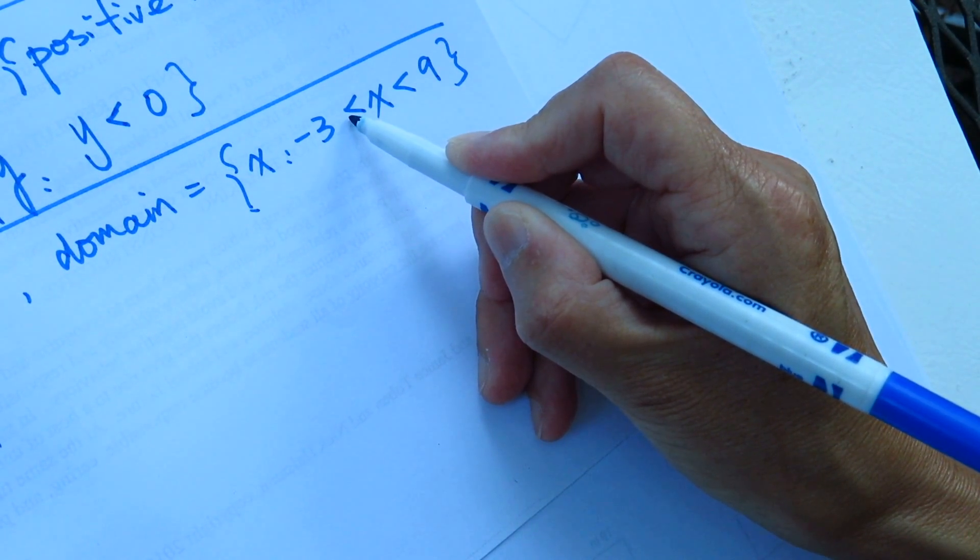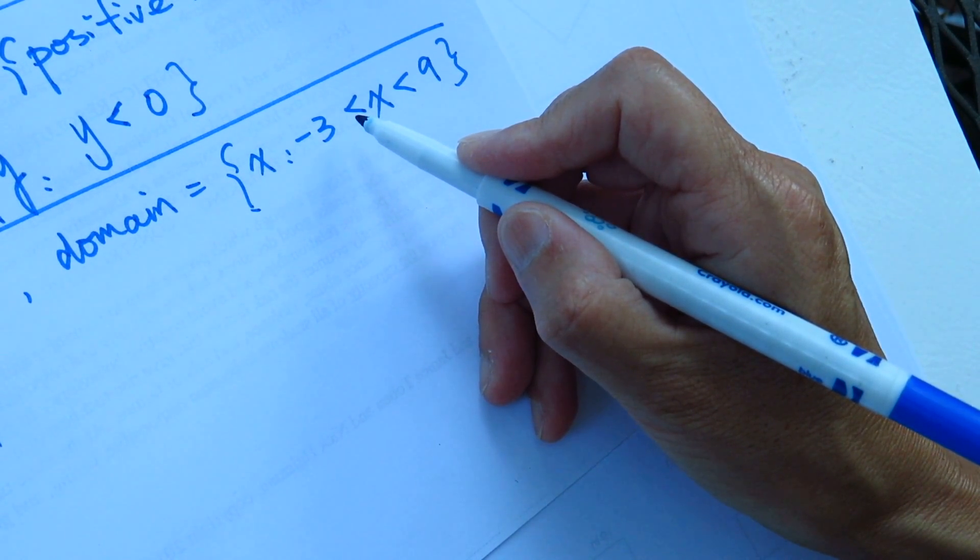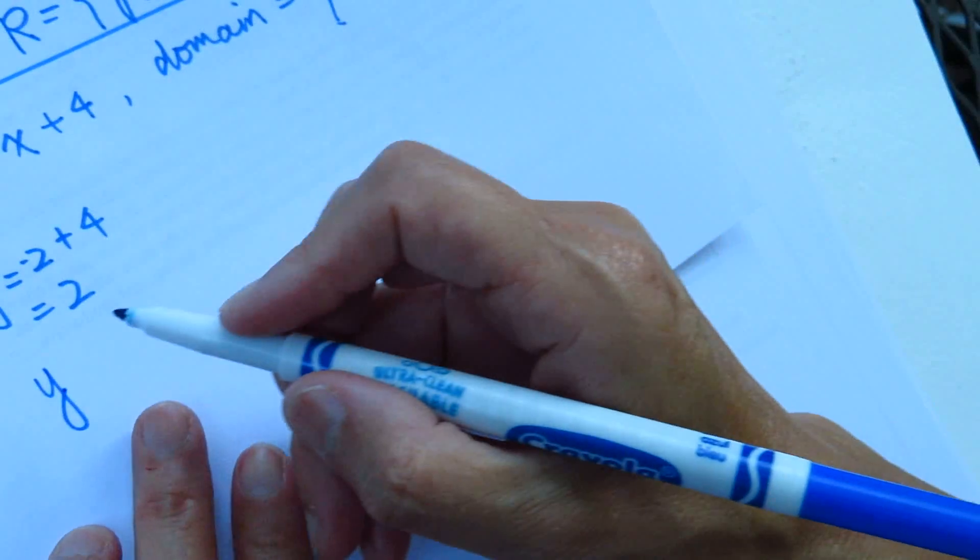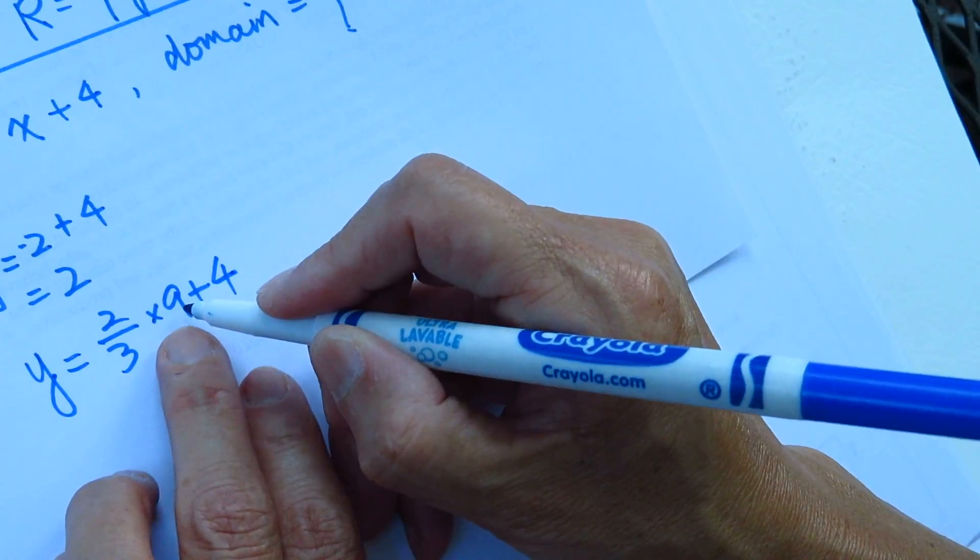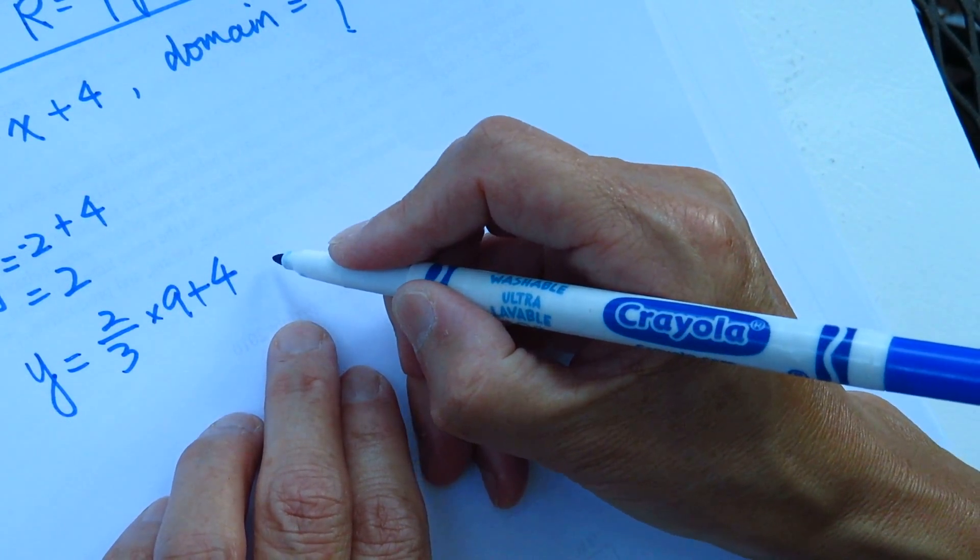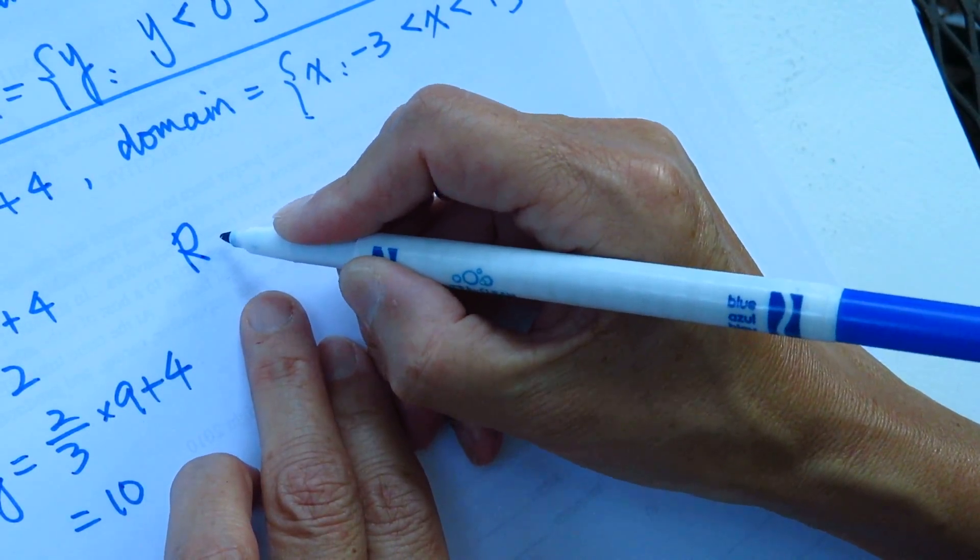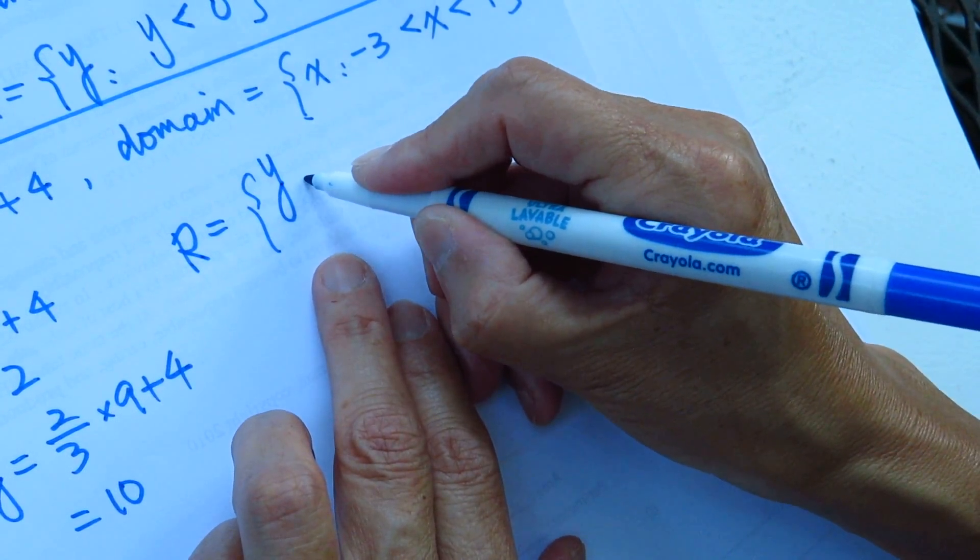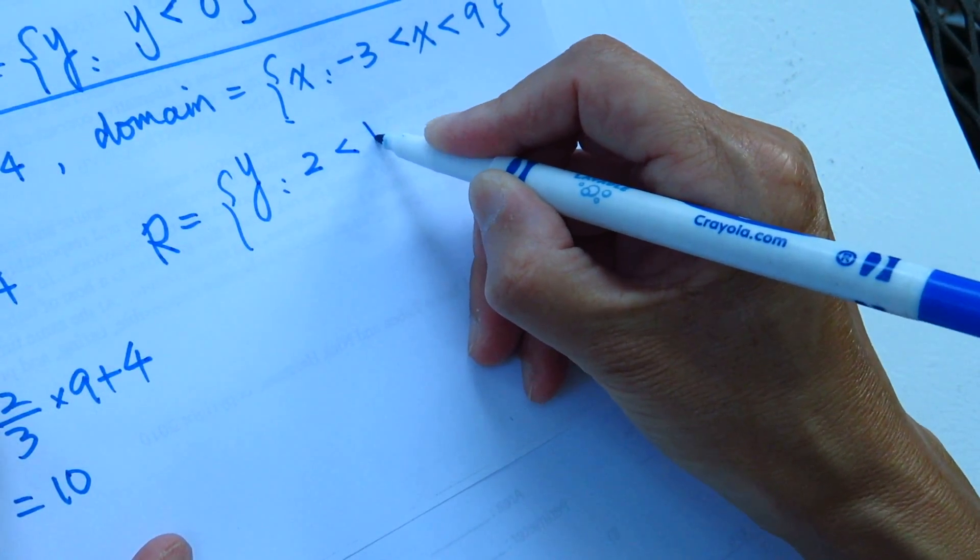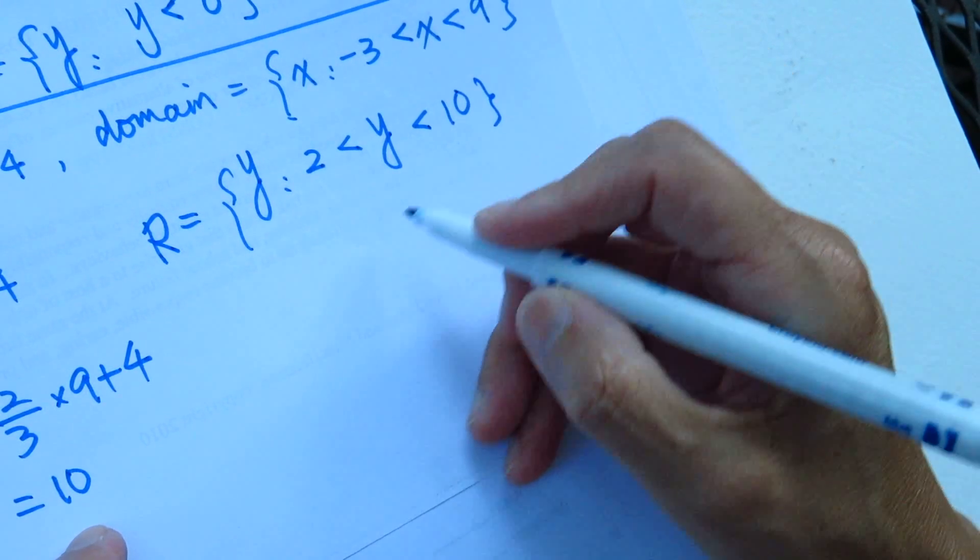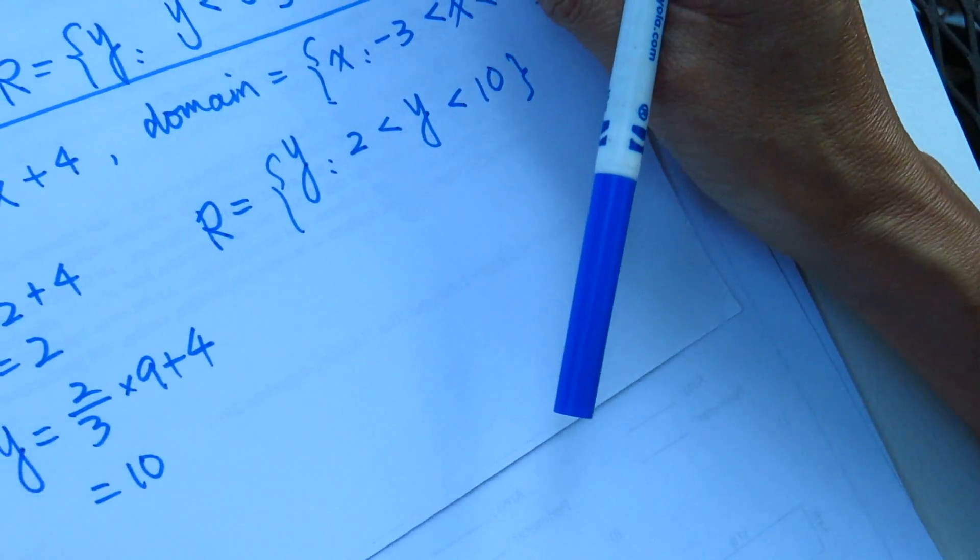So the domain is within 3 and 9. So you can see here, and the slope is positive, so the smaller X, the result will be smaller. The X becomes bigger, the result will be bigger. So the smallest X, let's see when X is negative 3, Y equal to negative 2 plus 4 equal 2. But this is not possible because here X is not 3, but we are just supposing, we are looking for that extremity. When X equal to 9, two-thirds times 9 plus 4 equals 10.